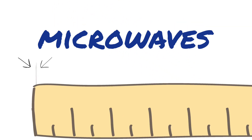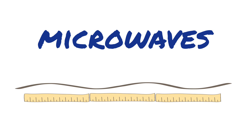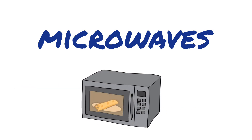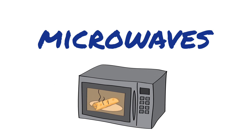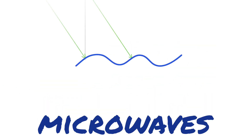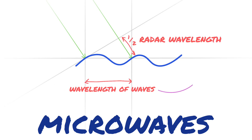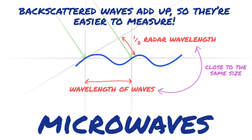Microwaves have wavelengths between one millimeter and one meter, and microwave ovens work because those light waves are exactly the right size to agitate the water molecules in your food, heating it up. They're also exactly the right size to tell us about wind-driven ocean waves. The spacing between the waves and the wavelength of the radar are similar, which causes a resonance effect and makes it easier to measure.